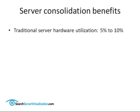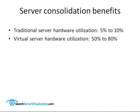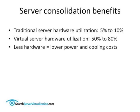So typically, in a traditional server environment, the utilization rates would be 5% to 10%, and with virtualization your utilization goes up to 50% to 80%, meaning essentially that you buy a lot less servers and also save money on power and cooling costs, which are a huge issue for data centers these days.